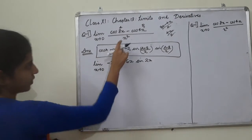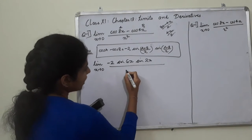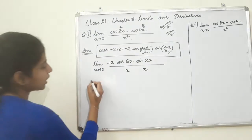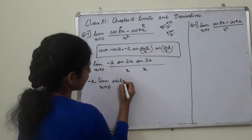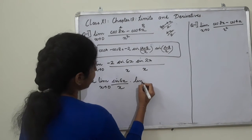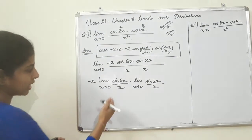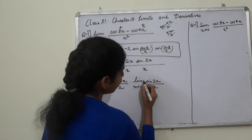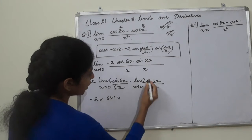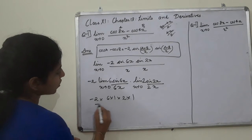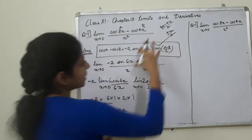So we substitute this into the formula. We get negative 2 sin(6x) sin(2x), divided by x squared. We can write this as negative 2 times [sin(6x)/x] times [sin(2x)/x]. Multiplying by 6 and 2 appropriately: negative 2 times 6 times 2, giving us negative 24. This formula is easy to solve.